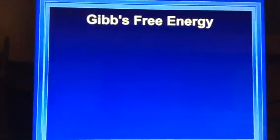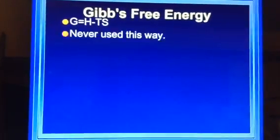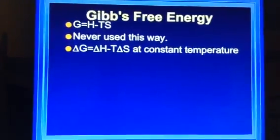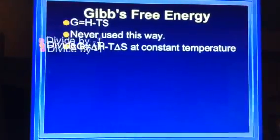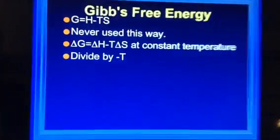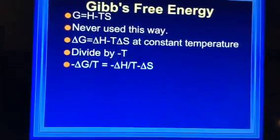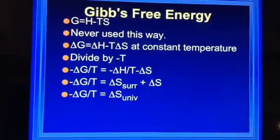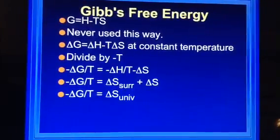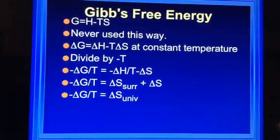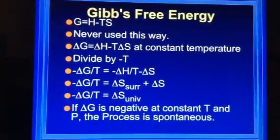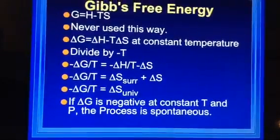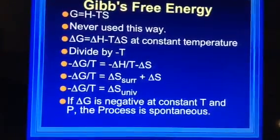Let's talk about Gibbs free energy. Gibbs equals H minus TS. We never use it this way. Delta G equals delta H minus T delta S at constant temperature. So if I divide both sides by negative T, I will get negative delta G over T equals delta S of the surroundings plus delta S or just delta S of the universe. If delta G is negative at constant temperature and pressure, the process is spontaneous. That is really important.